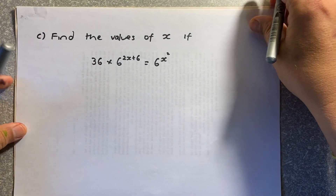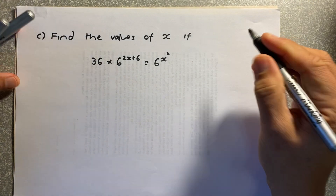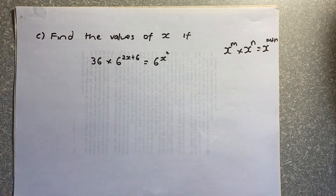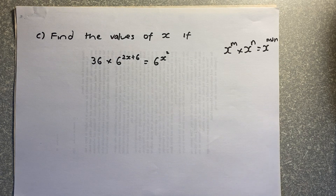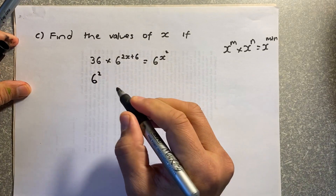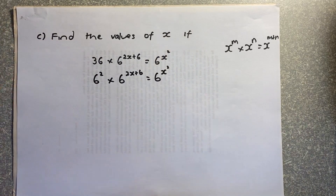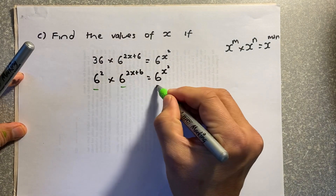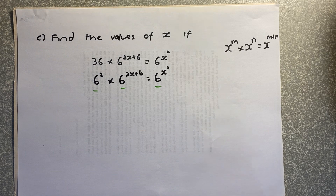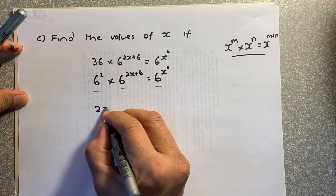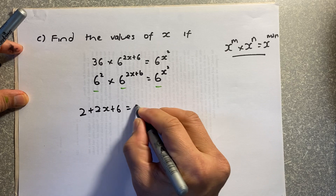Next is the excellence question. You need to know the indices rule: x^m multiplied by x^n equals x^(m+n). You must make the base the same. So 6^36 is the same as 6 squared, times 6^(2x+6), equals 6^(x²). Since the bases are the same, you can equate the powers: 2x + 6 + 2 equals x².